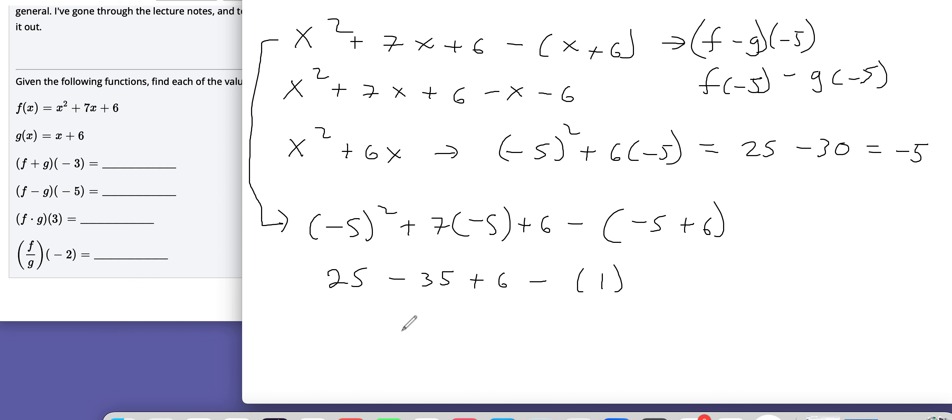25 minus 35, so negative 10 plus 6 minus 1. So that's negative 4 and then negative 5. And so if you look, there we go. I got the exact same answer either way.